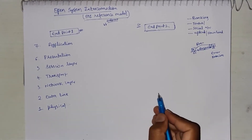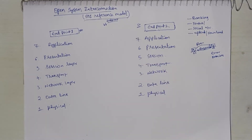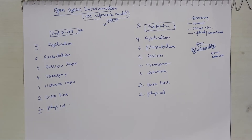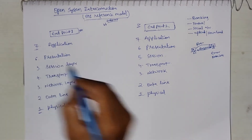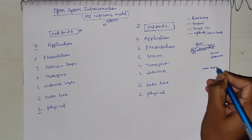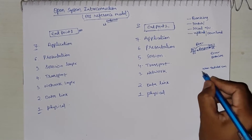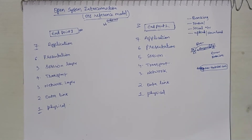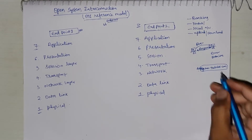The same layers are present on the destination side as well — from application layer to physical layer at both endpoints. There is a reason why I started from Layer 7 and ended at Layer 1, and we will understand that eventually. Now let's understand how exactly data flows in this OSI reference model. For example, let's take www.youtube.com.